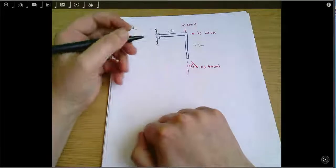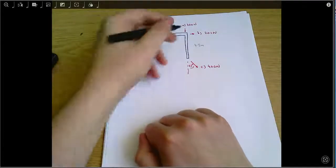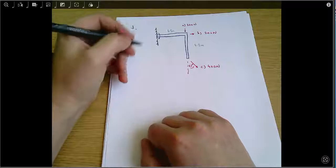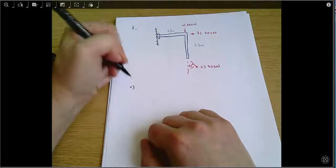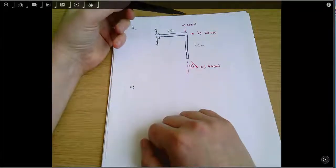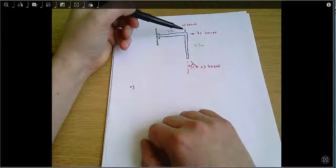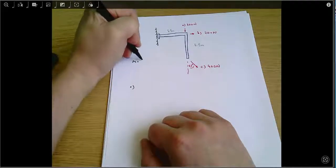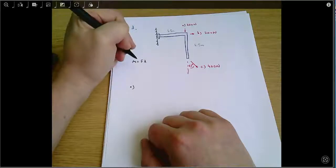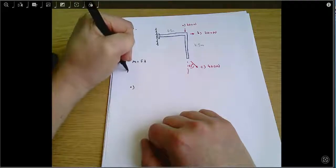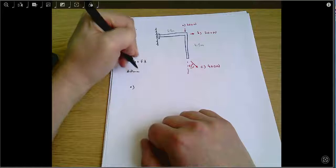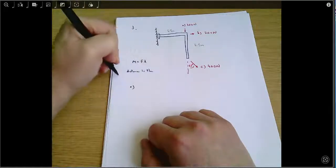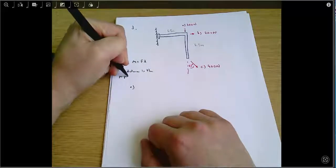So it wants to know four things. The moment due to each of these individually and then the total moment. In A, the important thing to think about here, a moment, it's worth noting, moment equals force times distance and the distance is the perpendicular distance to the pivot.